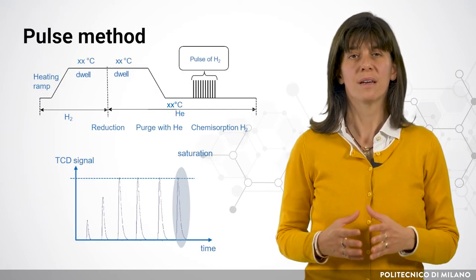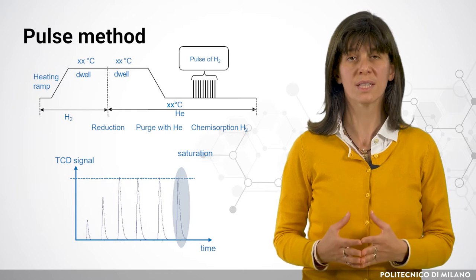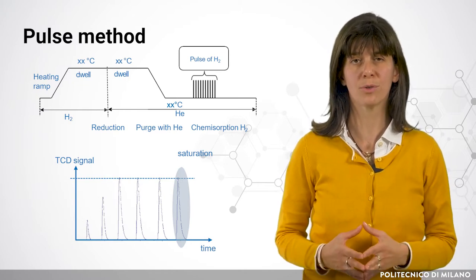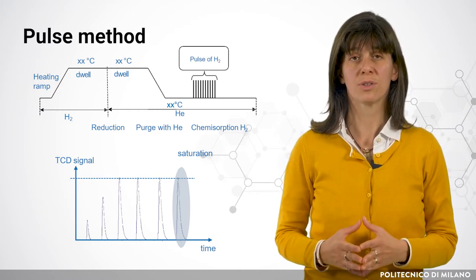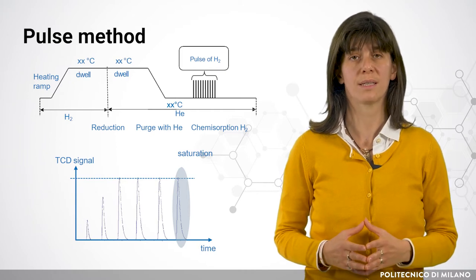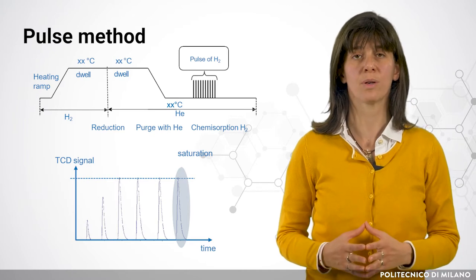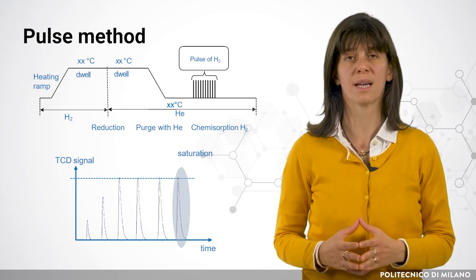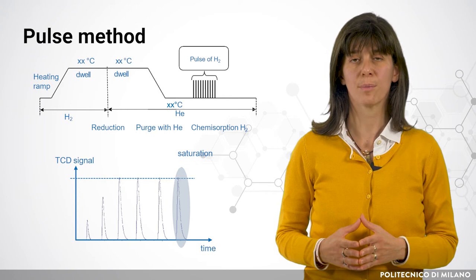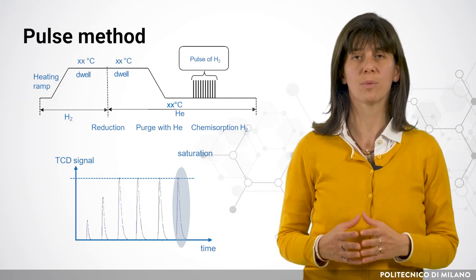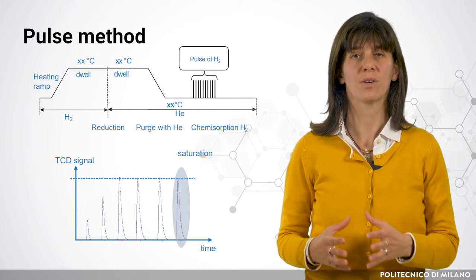At the beginning there is a heating ramp to heat the sample up to a defined temperature, then a hydrogen flow is admitted to the reactor in order to reduce all the metallic sites. At the same temperature, a purge with helium is performed to eliminate the excess hydrogen. Then we cool the sample, fix the temperature depending on the probe molecule and the metallic surface, and send a number of pulses.